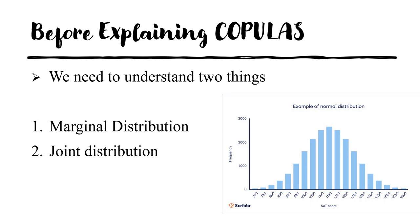You all know what a normal distribution is. For example, if you see on the x-axis we have SAT scores and on the y-axis we have frequencies. This is a perfect normal distribution in which the data are scattered equally on both sides of the average. The mean is 1150, so there is a very high frequency at 1150, and fewer frequencies for very low or very high SAT scores.